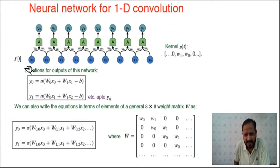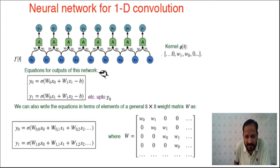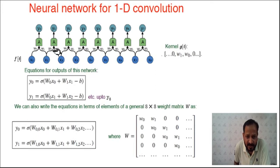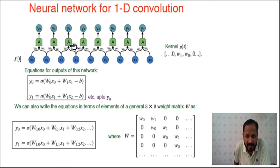For a 1D convolution with time series data, inputs are x0 to x8 (nine inputs), and the kernel has only two values w0 and w1. w0 and w1 are multiplied with x0 and x1, summed with a bias to give y0. Then w0 and w1 are multiplied with x1 and x2 to give y1, and so on. The outputs y0 to y7 are obtained by repeating for all inputs and weights.